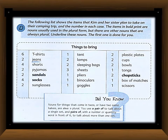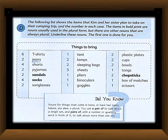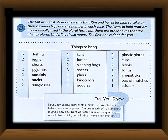Now let's start Exercise D. The question says: the following list shows the items that Kim and her sister plan to take on their camping trip, with the number for each item. The items in bold print are nouns usually used in plural form, but there are other nouns that are always plural — underline these nouns; the first one is done for you. The grammar help explains that clothing articles are usually used in plural, and things with two parts are always plural — for example, 'jeans,' because they have two legs.